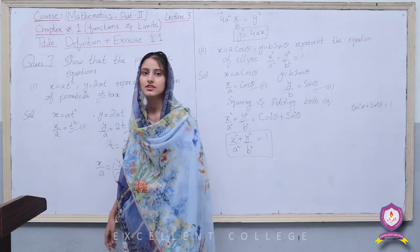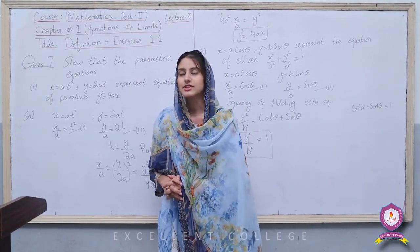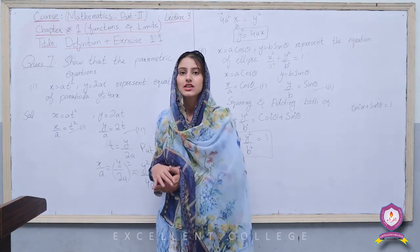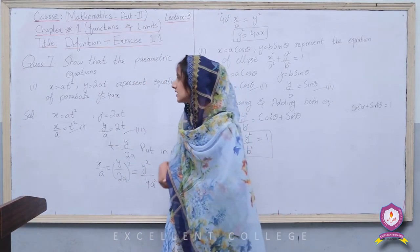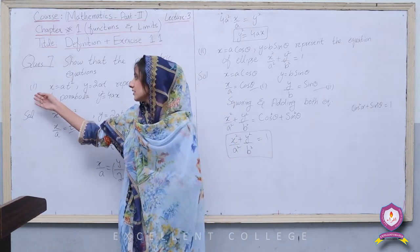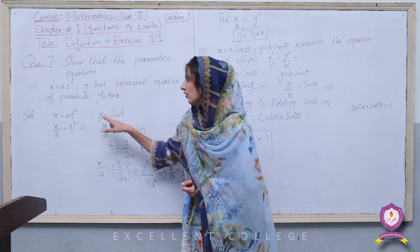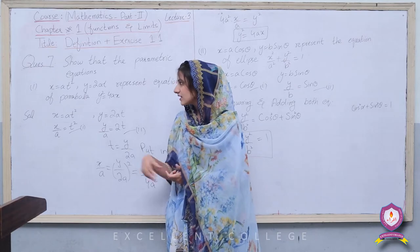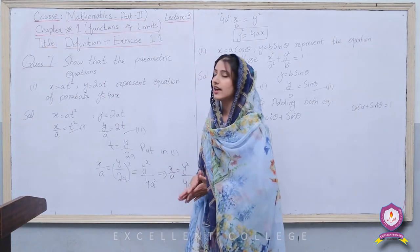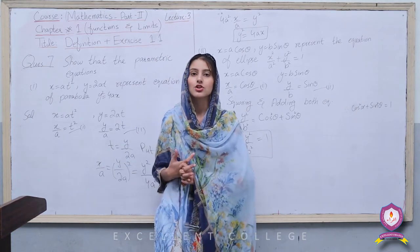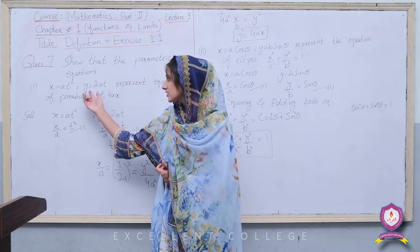Now Question 7: Show that the parametric equations represent a parabola. Parametric equations have a third variable in addition to x and y. Part (a): x = at², y = 2at. We need to show these represent the equation of a parabola y² = 4ax. The equation of a parabola is y² = 4ax.